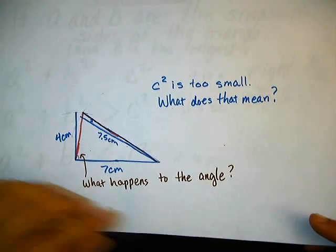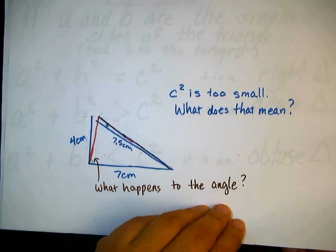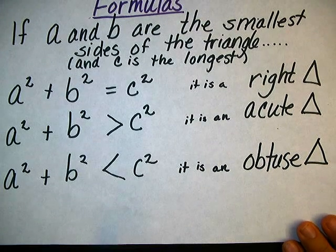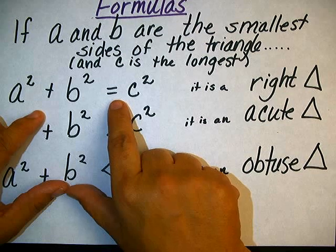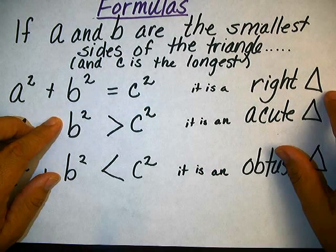So that brings up the general guidelines for determining if a triangle is acute, right, or obtuse, using the Pythagorean theorem. So if C squared is just right, a squared plus b squared equals c squared, it is a right triangle.